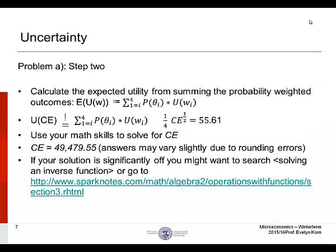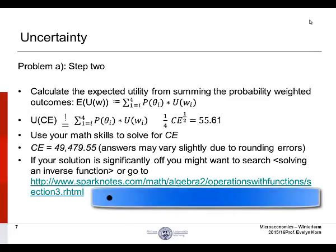Problem A, step two. Calculate the expected utility from summing the probability-weighted outcomes. Expected utility of wealth equals the sum of the probability of each state of the world occurring times the utility of wealth associated with each state. That gives us utility of the certainty equivalent, but we are interested in the wealth associated with the utility of the certainty equivalent. Therefore, we need to invert the function so that we can have the wealth associated with the certainty equivalent. When we do that, we have 49,479.55. Answers may vary slightly due to rounding errors. If your solution is significantly different, you may have made a mistake when inverting the function.